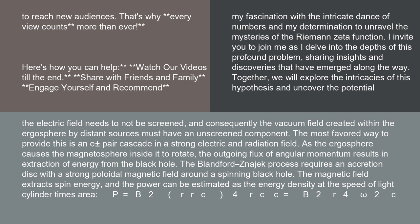The Blandford-Znajek process requires an accretion disk with a strong poloidal magnetic field around a spinning black hole. The magnetic field extracts spin energy, and the power can be estimated as the energy density at the speed of light cylinder times area.